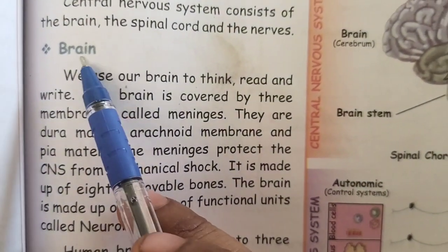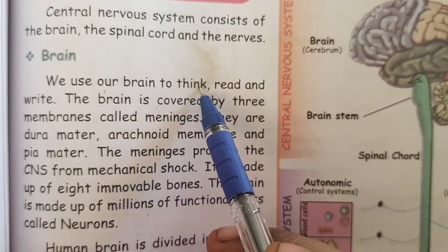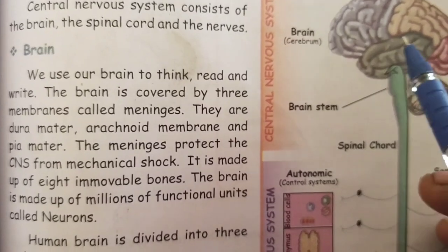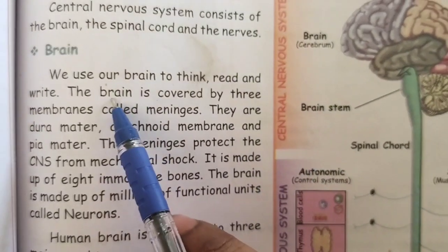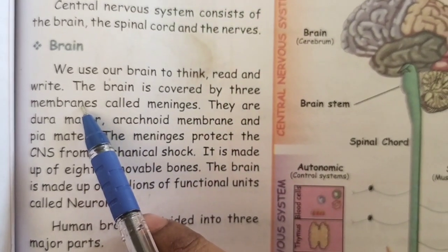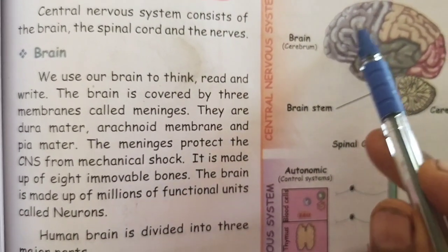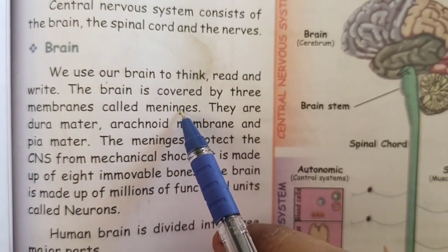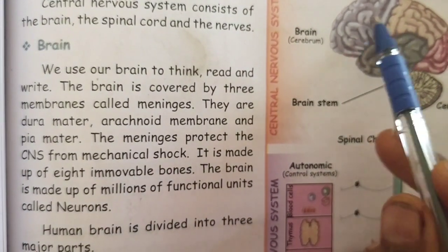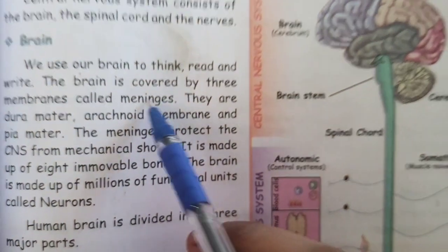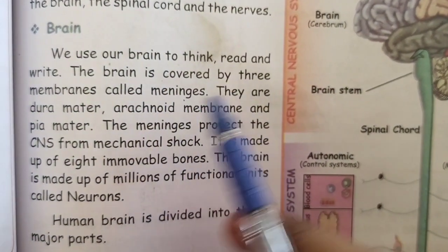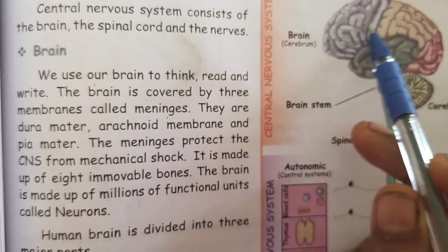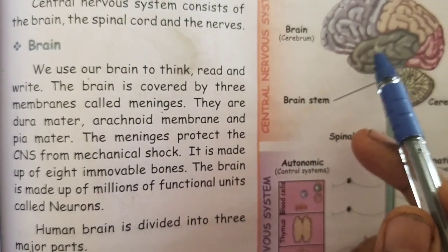The first one is the brain. Students, we use our brain to think, read and write. The brain is the main part of the central nervous system. The brain is covered by three membranes, like layers of skin, called meninges. The three layers are duramater, arachnoid membrane and piamater.